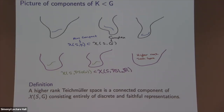Let me give the definition of a higher-rank Teichmüller space. A higher-rank Teichmüller space is, by definition, a connected component of this character variety which consists entirely of discrete and faithful representations. What Hitchin proved was that this component doesn't contain any compact representations — a very necessary condition to have discrete and faithful representations — but it's very far from sufficient.